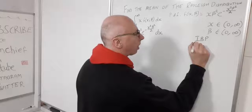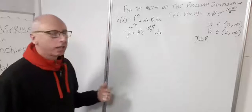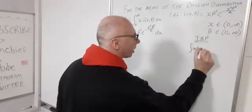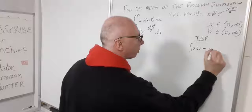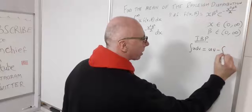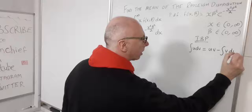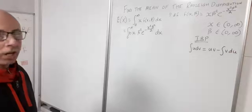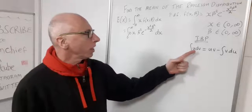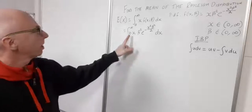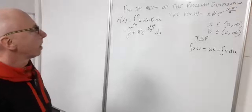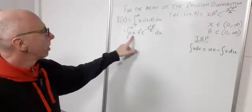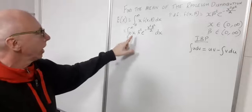The formula for integration by parts is: the integral of u dv equals u·v minus the integral of v·du. We need to decide which term to integrate and which to differentiate. We've already integrated the term x·beta squared·e^(-x²β²/2) in a previous video, so we know how to handle that one.